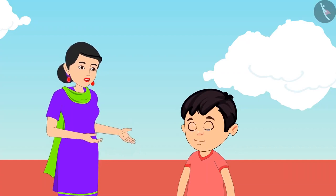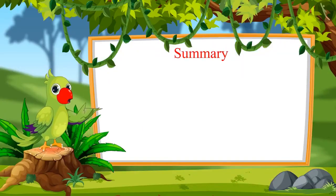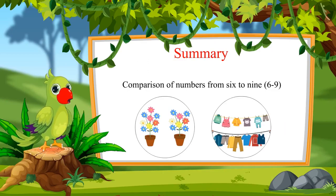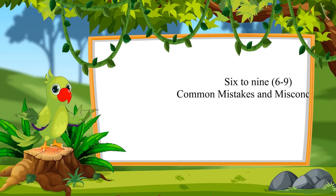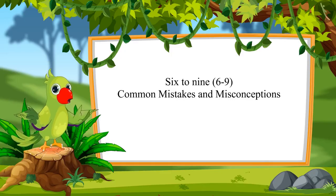Come on, let us take all the dried clothes quickly and go back downstairs. So children, that was all for today. In this video we saw some examples of numbers from six to nine in which we compared these numbers. In the next video we will see some more examples and learn about common mistakes. Goodbye friends.